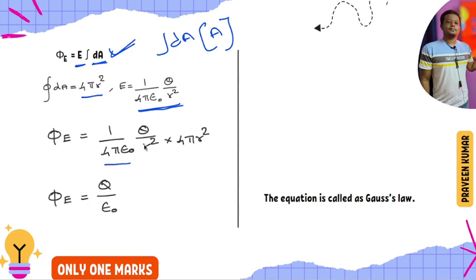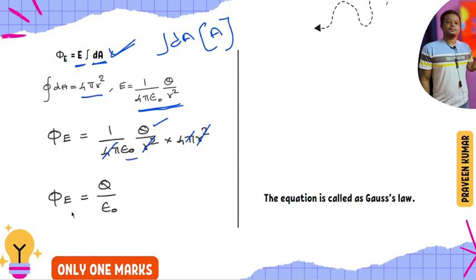Substituting: (1/4πε₀) × (Q/r²) × 4πr². The 4π and r² terms cancel, giving the answer Q/ε₀. So flux equals Q by epsilon naught. This is called Gauss's law.